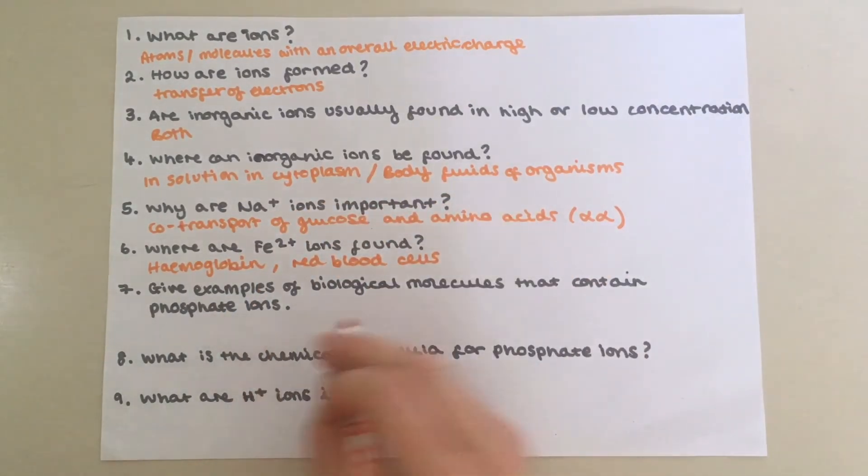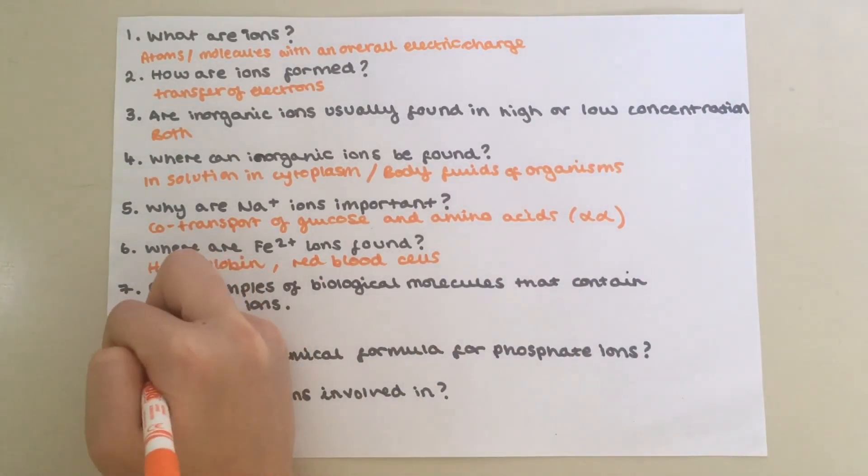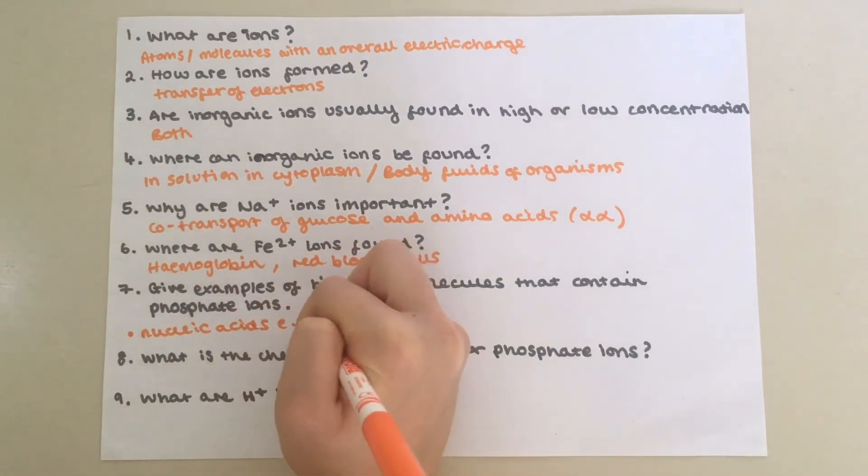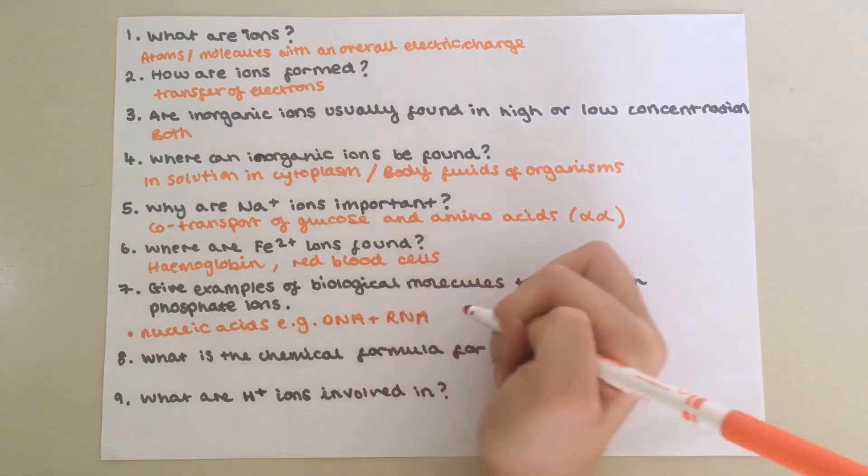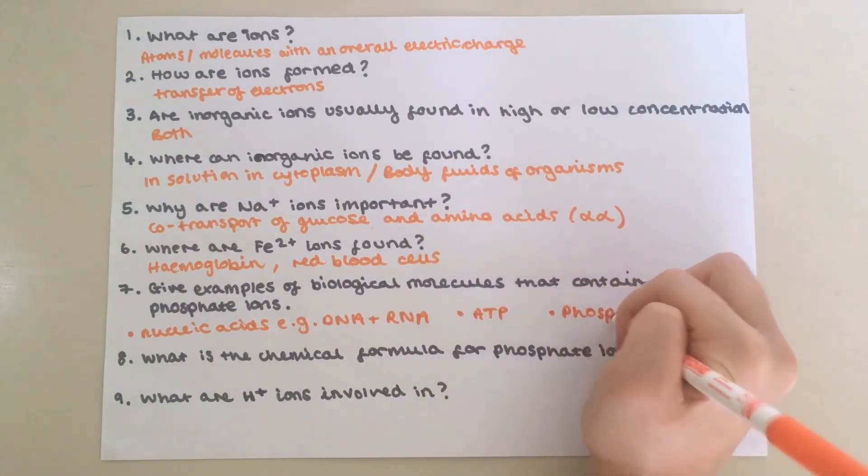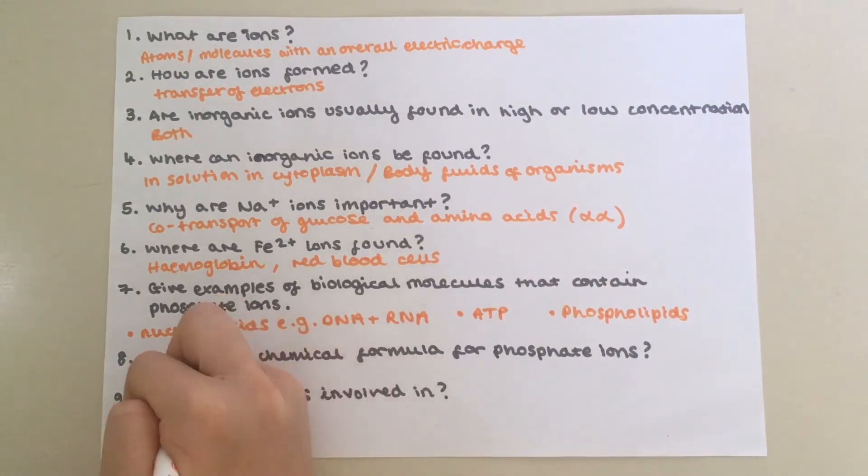Seven, give examples of biological molecules that contain phosphate ions. You can have nucleic acids, e.g. DNA and RNA, also ATP and phospholipids in the cell membrane. Eight, what is the chemical formula for phosphate ions? It is PO4 3-.